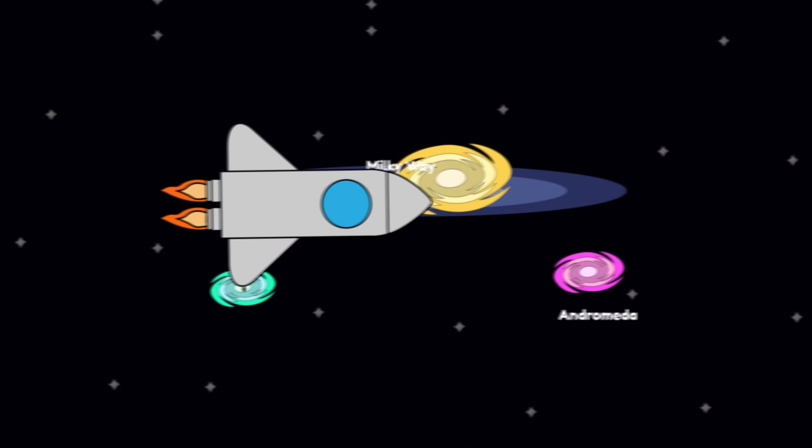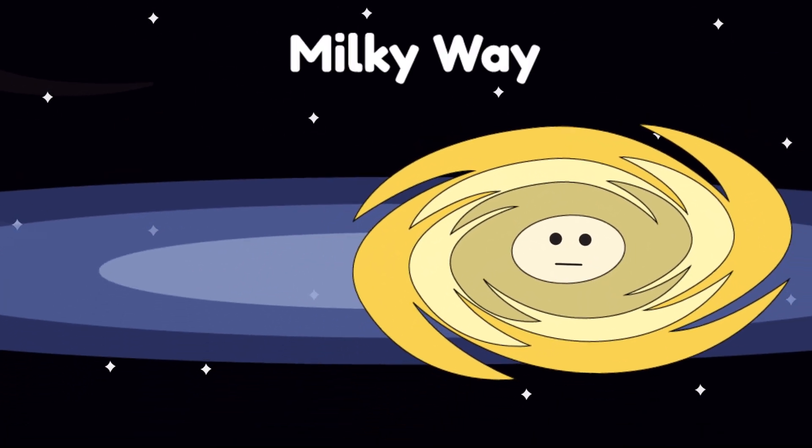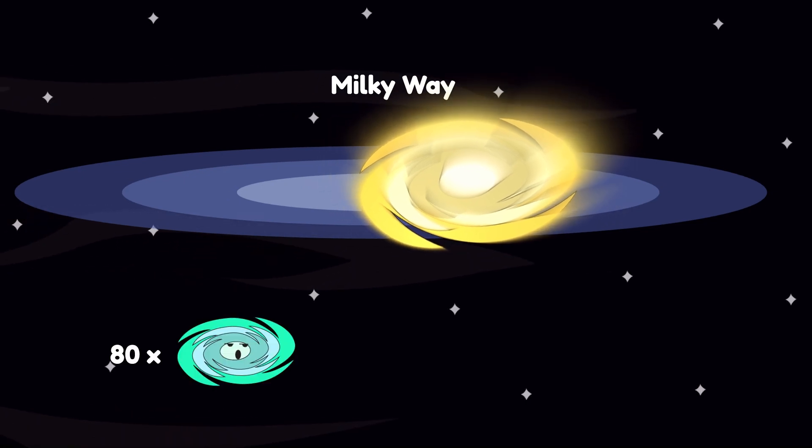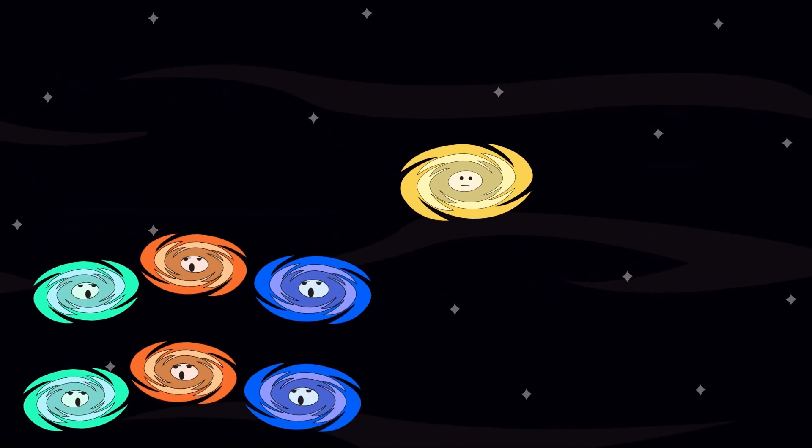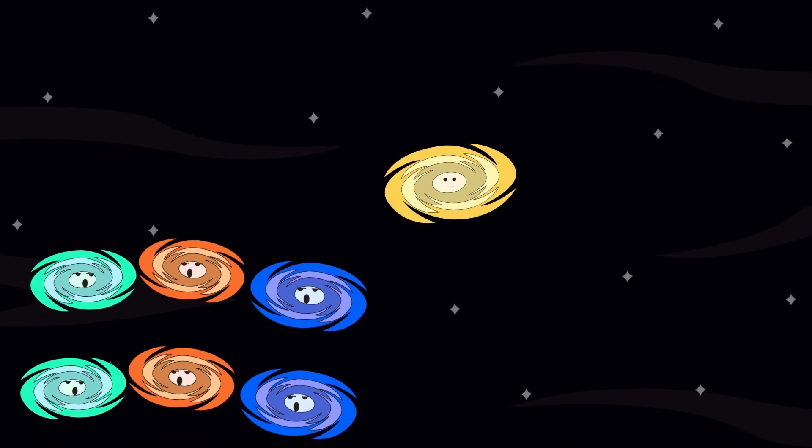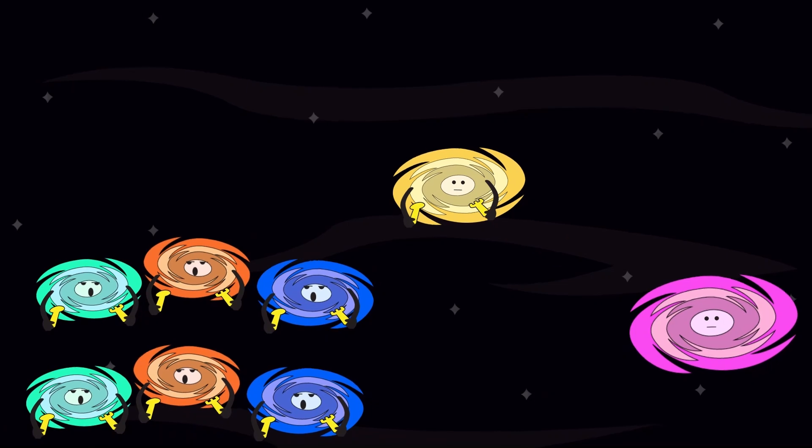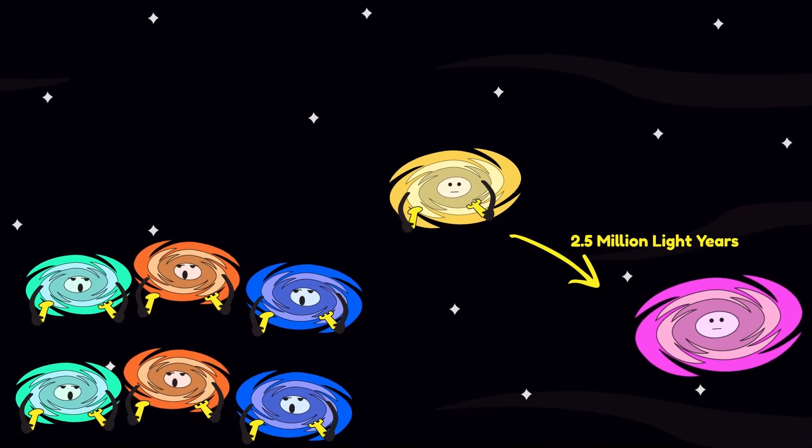Level 4. The Local Group. Zoom out again, and the Milky Way shrinks into one glittering frisbee among 80 others. The Local Group. A cosmic family gathering where everyone's awkward and hungry. The big sibling, Andromeda, is 2.5 million light years away and moving in fast.